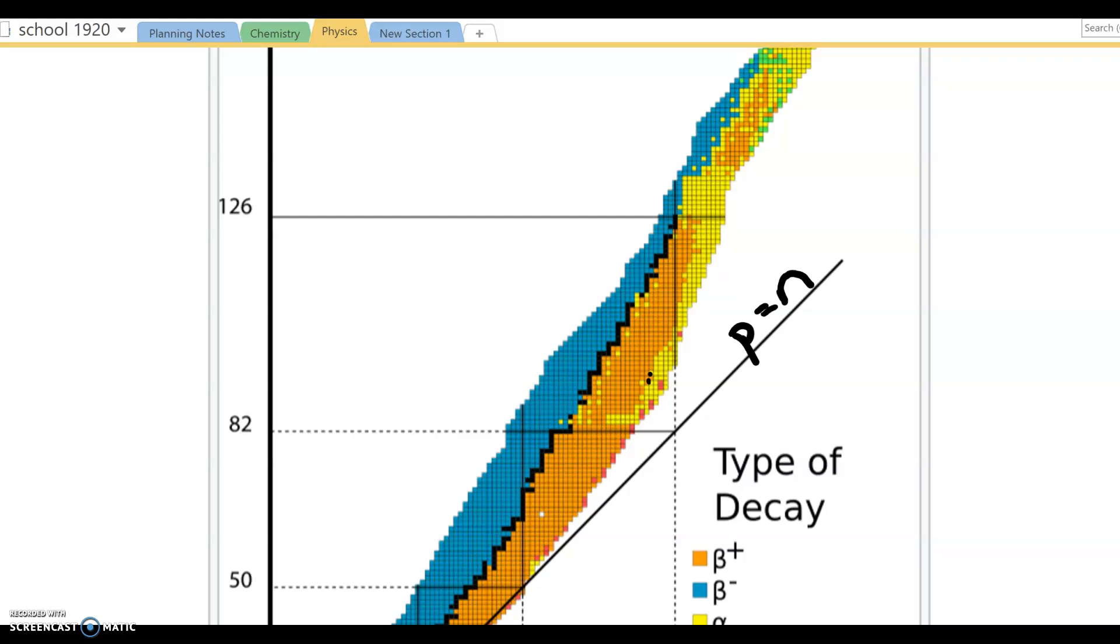If they are above the line, the number of neutrons is greater than the number of protons. If the isotope is located below the black zigzag line, the number of neutrons is less than the number of protons.